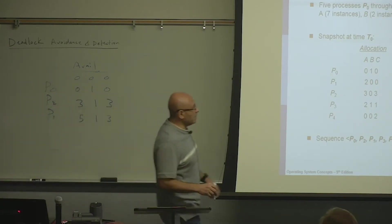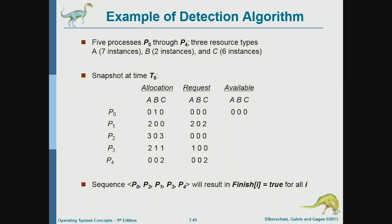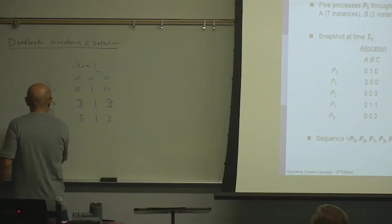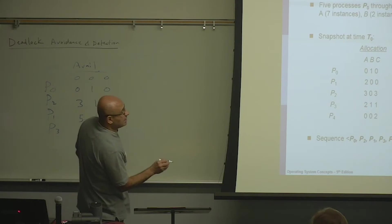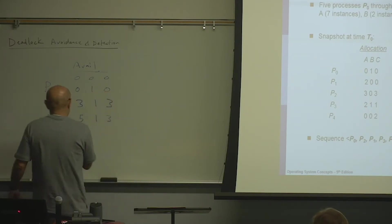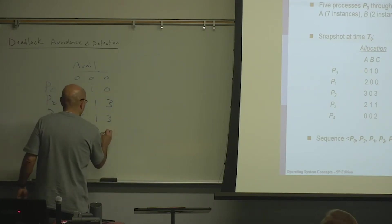Now with five, one, three — can we satisfy P3's request? Yes, we can. So we put P3. After it's done, it's going to release two, one, one. So that's going to be seven, two, four.